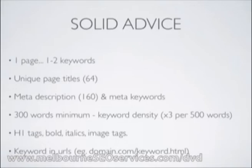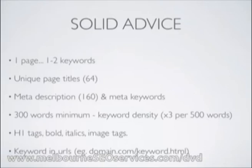For each page, each page should only be optimized for one keyword, maybe two keywords. A lot of people try to have one page go after ten different phrases. What ultimately ends up happening is you confuse Google as to what that page is about — for example, golf balls, golf clubs, golf swing. If you try to optimize one page for all three, it would be difficult for Google to know what the page is about.